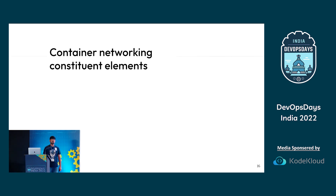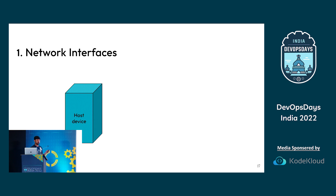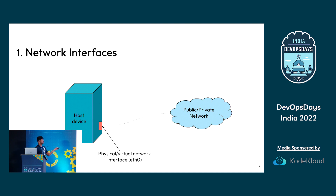Before we see how that happens, there are a few Linux elements that make this networking possible. The first one is network interface. In the demo we saw there were loopback interface and eth0, S3, and S8. Your host device needs to communicate with the public or private network, and the network interface is the point of communication between your host device and the network — it could be physical or virtual.